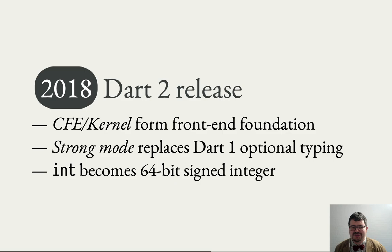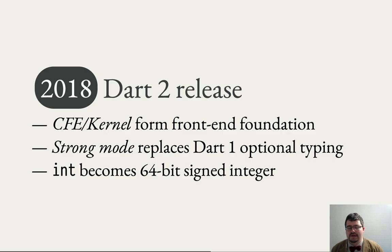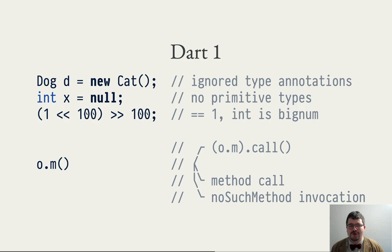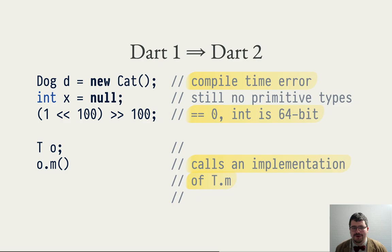There was also a small change that snuck under the radar: we said nobody needs an arbitrary-width integer as the default integer type — we capped it at 64-bit, simplifying some backend implementation that no longer needs to deal with the possibility of an integer overflowing into bignum. So going back to the Dart 1 compilation challenges slide, Dart 2 actually addressed some of them. You can no longer store a Cat in a variable of type Dog. You can no longer shift left by 100 and right by 100 and get one as a result — you now overflow 64 bits and get zero.